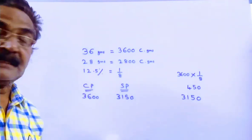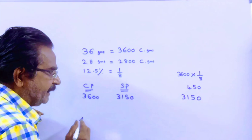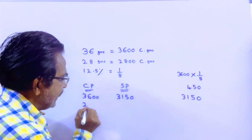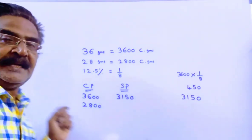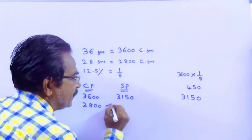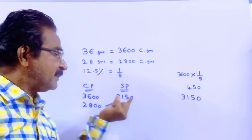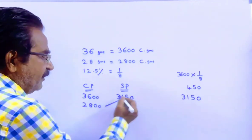But he uses a false weight of 28 grams, that means he is giving only 2800 centigrams for rupees 3150. So this is his cost price, this is his selling price, profit obviously 350.